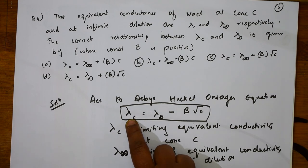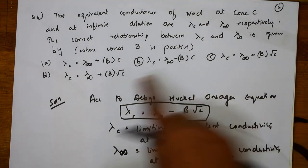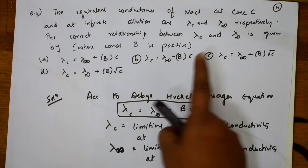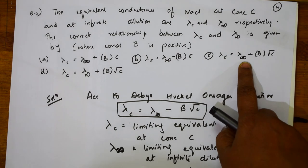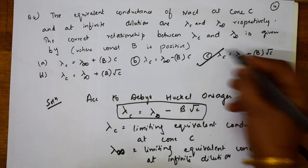What is this lambda C? Lambda infinity minus B into root C. So this is ruled out. This is plus, wrong. The next one minus BC, this is also ruled out. Next Onsager equation. Lambda C equals lambda infinity minus B into root C. So the correct option is C.